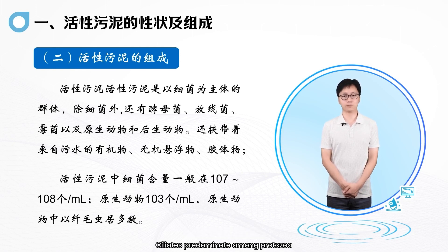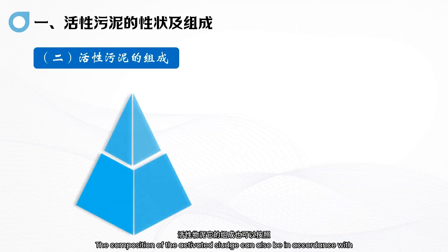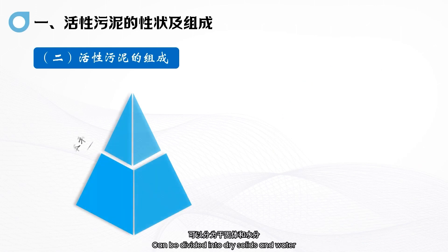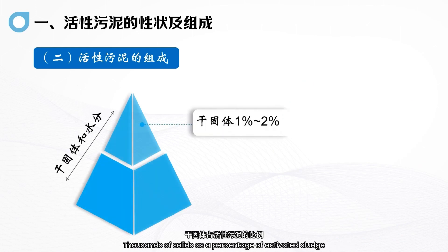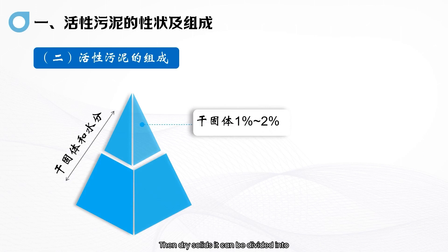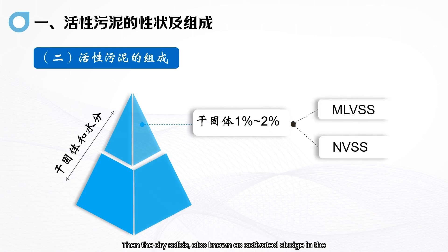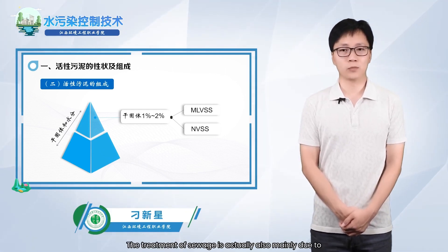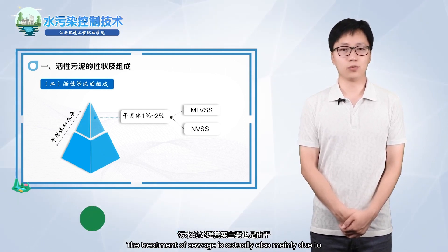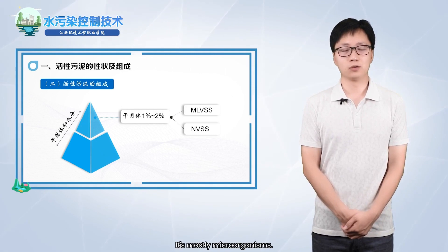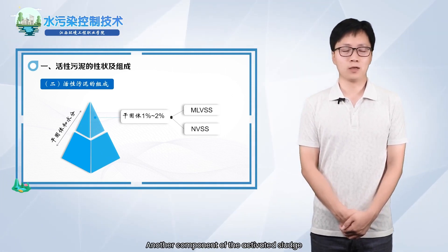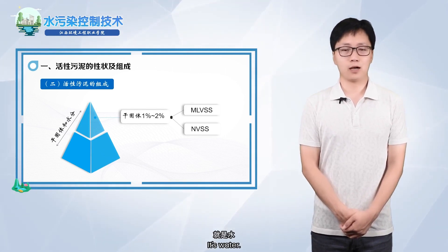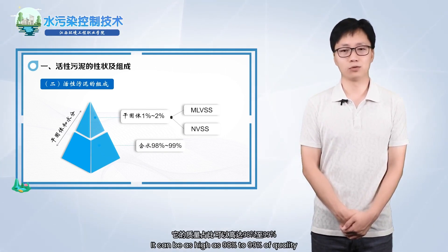Ciliates are predominant among protozoa. The composition of activated sludge can also be divided by ingredients into dry solids and water. Dry solids as a percentage of activated sludge are about 1% to 2%. Dry solids, also known as the base of activated sludge, are mainly composed of microorganisms including bacteria and fungi — it is these dry solid microorganisms that are primarily responsible for treating sewage. The other component is water, which can be as high as 98% to 99%.